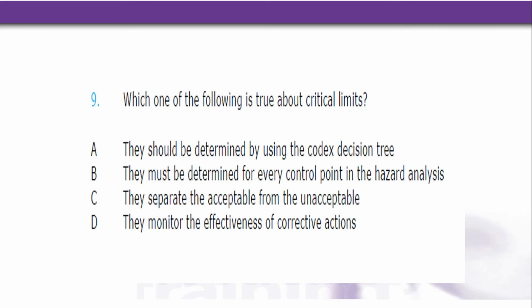Number 9. Which of the following is true about critical limits? A. They should be determined by using the Codex Decision Tree. B. They must be determined for every control point in the hazard analysis. C. They separate the acceptable from the unacceptable. D. They monitor the effectiveness of corrective actions.